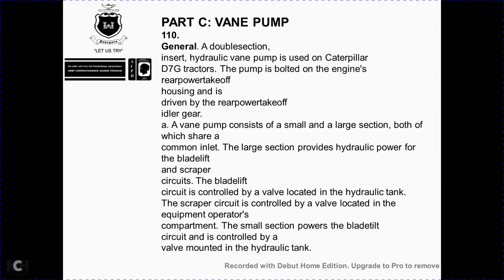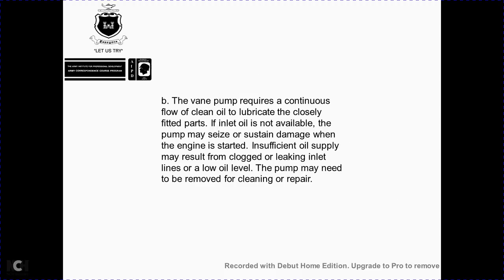Part Z: Vane Pump — General. The double-section hydraulic vane pump is driven by the engine via the G7 pump bolt through the rear power take-off housing and an idle gear. The pump consists of a small and large section, both sharing a common inlet. The large section provides hydraulic power for the blade lift, scraper, circle, blade, and lift circle controls via valves located at the hydraulic tank. The small section powers the blade tail and circle, controlled by valves mounted at the hydraulic tank. The vane pump requires continuous clean oil for lubrication of closely fitted moving parts. If inlet oil is unavailable, the pump surface will be damaged. Starvation from insufficient oil supply may result from a clogged or leaking inlet line or low oil level, requiring the pump to be removed, cleaned, or repaired.